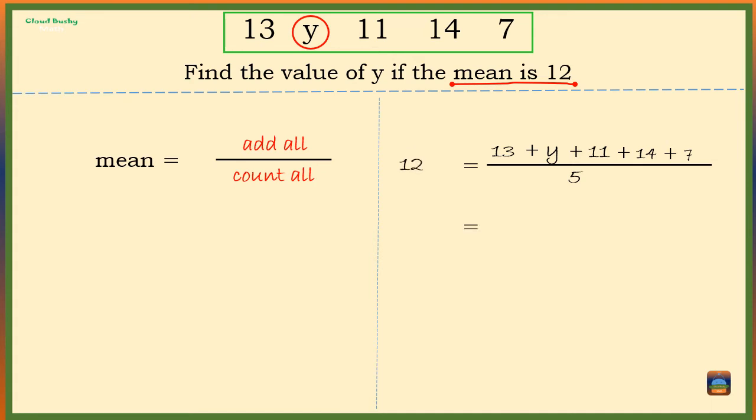So we have 13 + 11 + 14 + 7, which is 45, plus y, divided by 5, equals 12. We want to find the value of y.